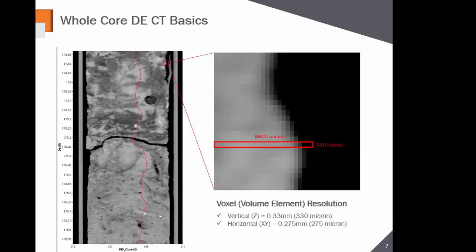Here's an example of whole core dual energy CT basics. I'm showing you a slab of a core in the aluminum barrel — this is how rocks are typically scanned. Digitally we can look at every slice we want in this image. Zooming into one section to show the individual voxels and their resolution requirements: on the long dimension that's 330 microns, and in the X and Y dimension that's 275 microns. That's why they're not perfect square cubes but rectangular prisms. This is the information we quantify through the length of the core.